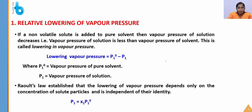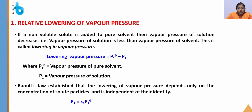First, relative lowering of vapor pressure. On addition of a solute, there is a decrease in the surface area of the solvent, causing a decrease in evaporation and reduction in vapor pressure. If a non-volatile solute is added to a pure solvent, the vapor pressure of the solution decreases. The vapor pressure of the solution is less than the vapor pressure of the pure solvent. This is called lowering of vapor pressure, represented as ΔP = P₁⁰ − P₁.